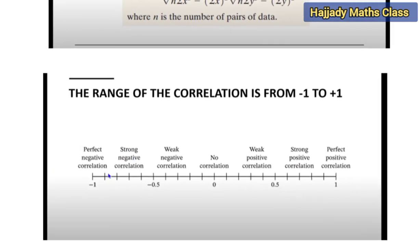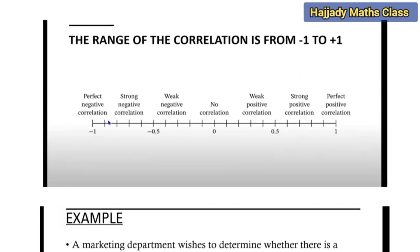For the first part, when we have a perfect negative correlation, this is when you have it to be negative 1. It shows that as x increases, your y decreases perfectly. In most cases, we don't usually have it to be negative 1, but it can be very close to negative 1. So any value from negative 1 to negative 0.5 is called the strong negative correlation.